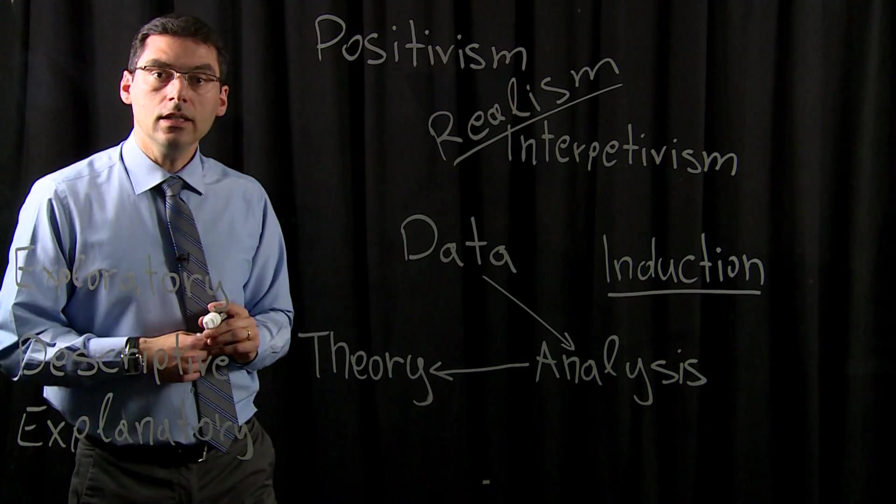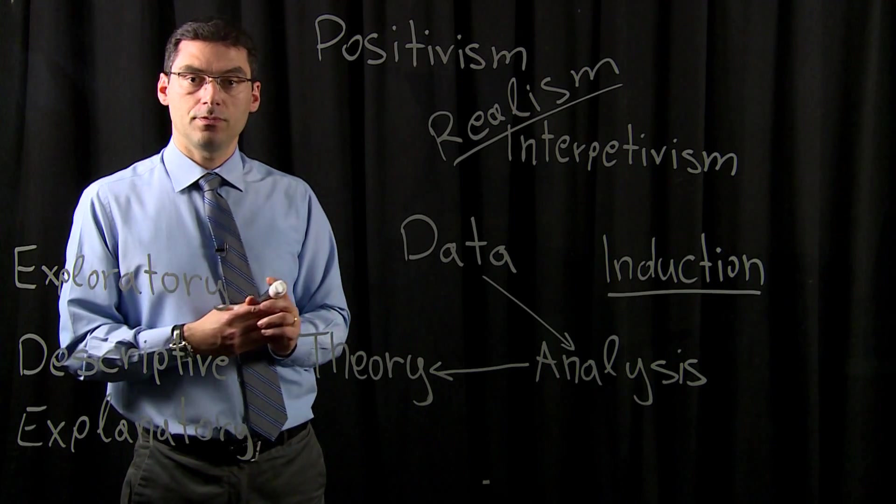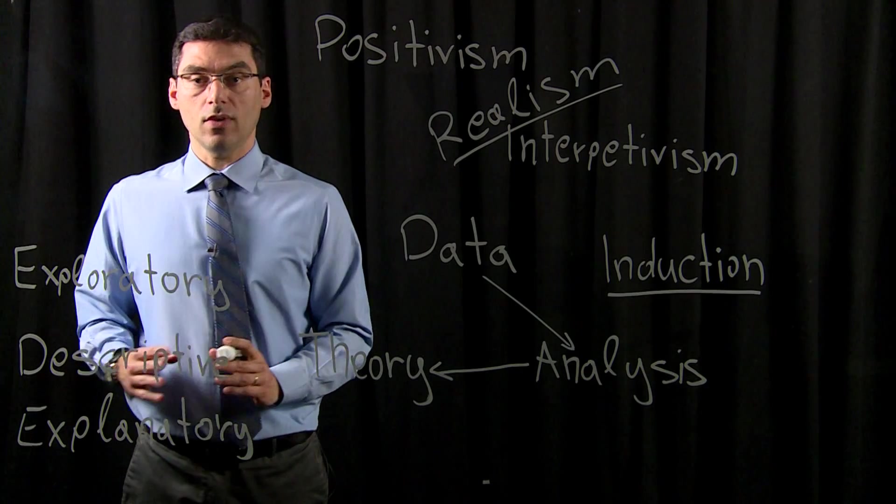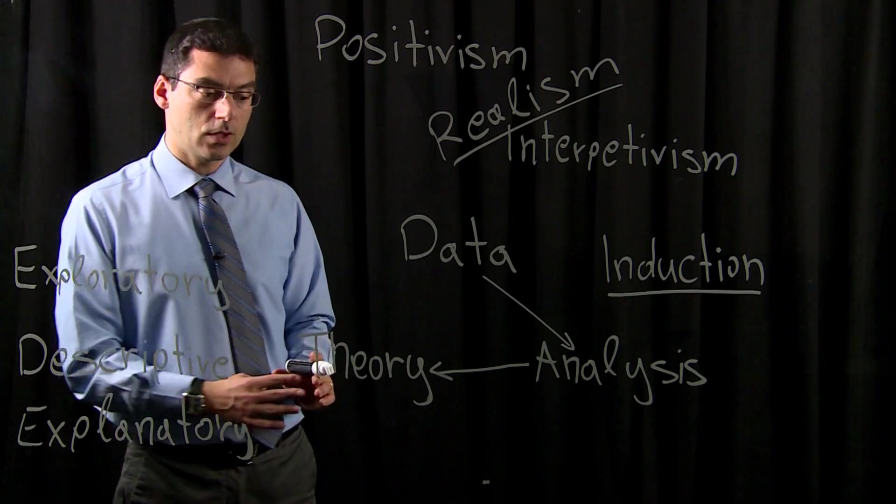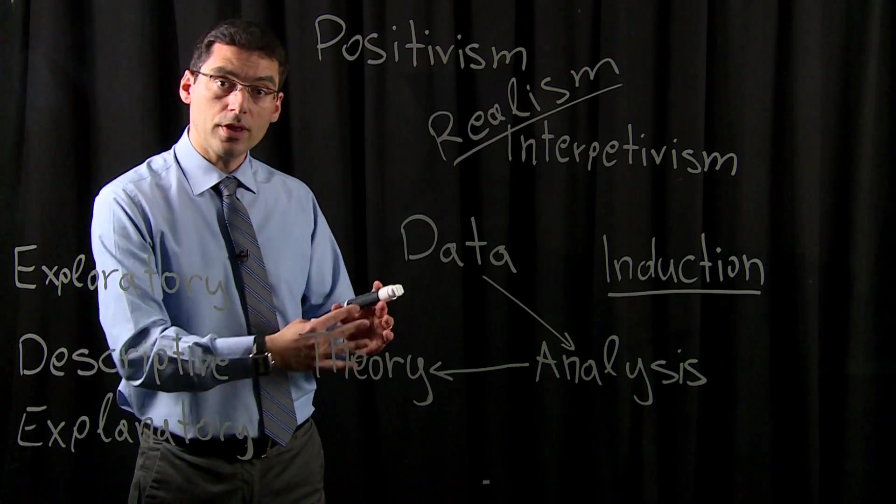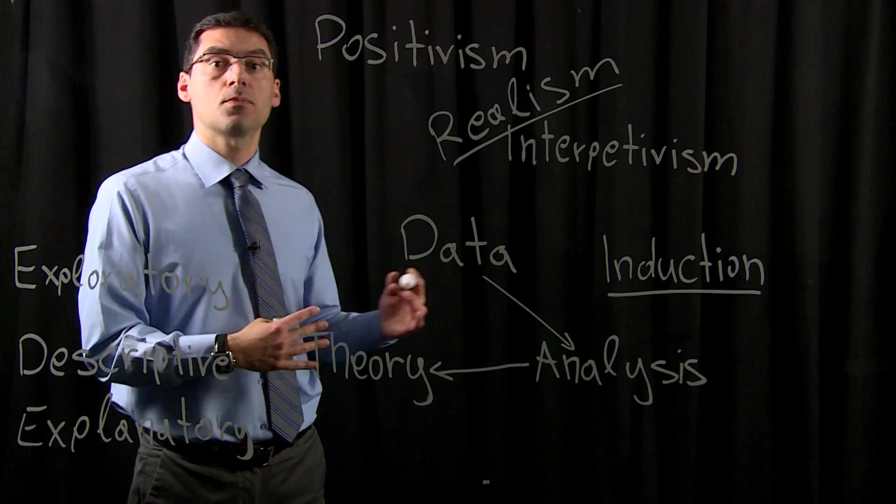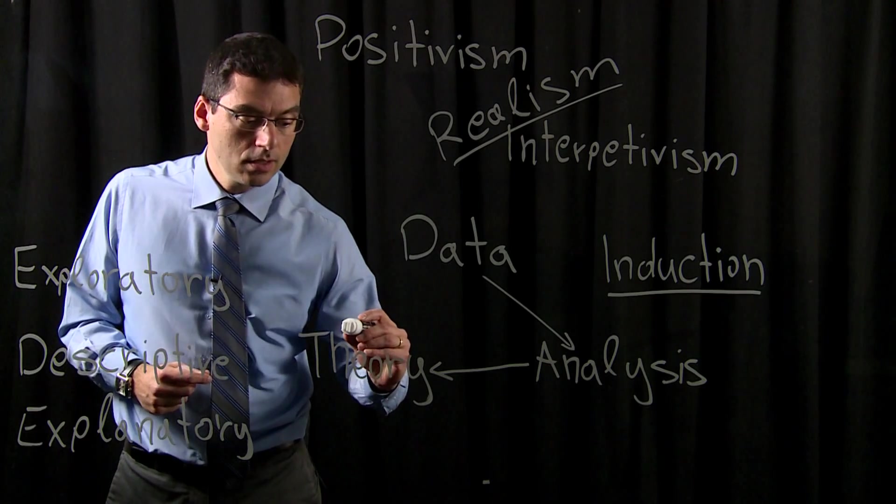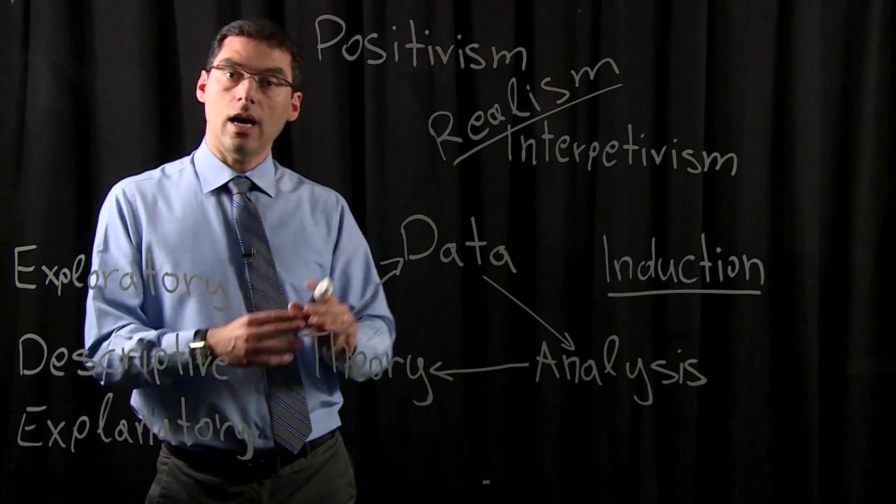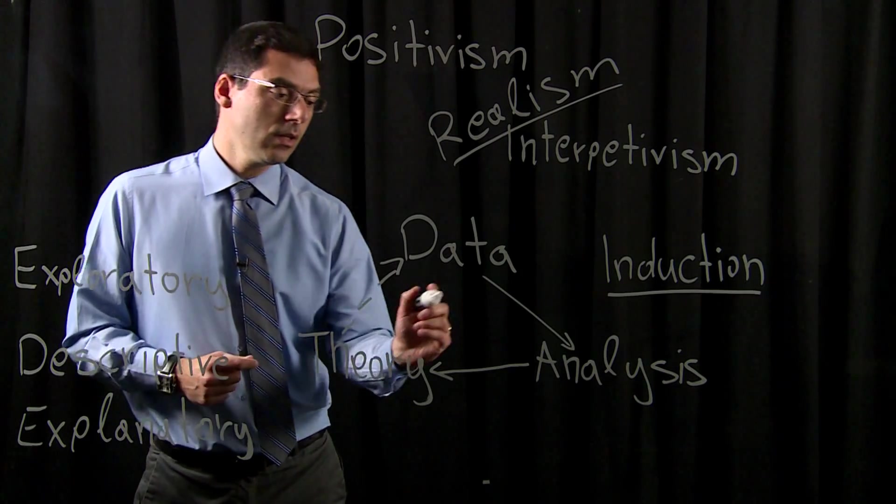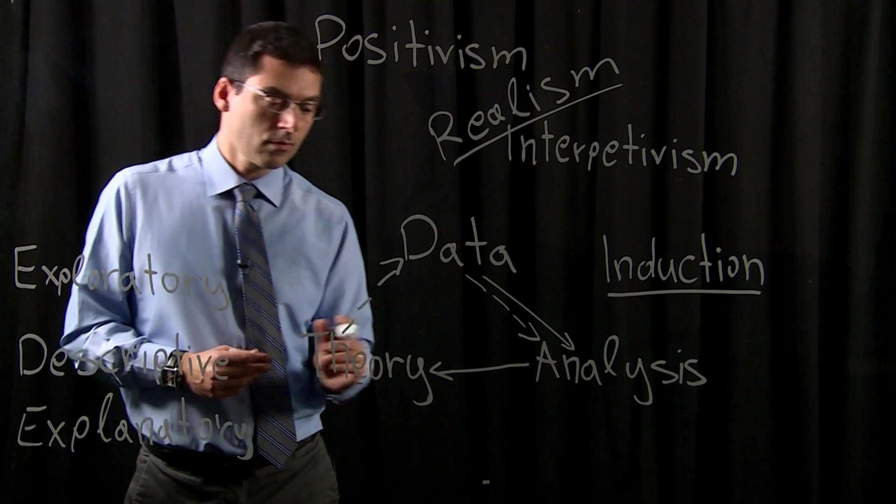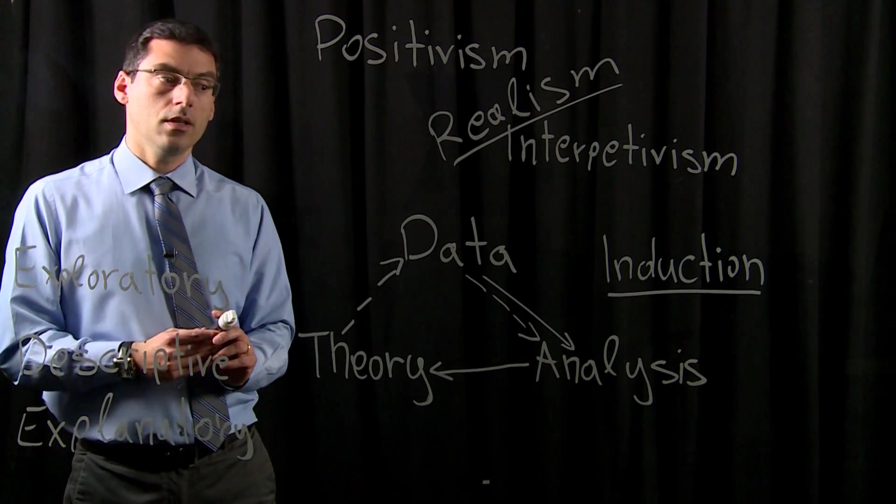On the other hand, we have deduction. In deduction, we are taking a theory and we are trying to either validate it or reject it. We are starting from the theory. The theory is giving the hypothesis, the assumptions, what we are expecting to find. Then we collect the data. And after having collected the data, we do the analysis. And this will be the deduction.